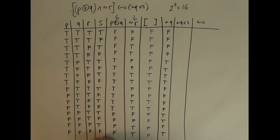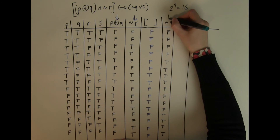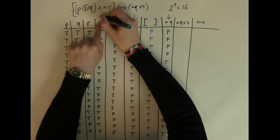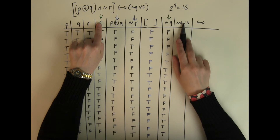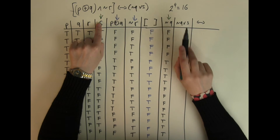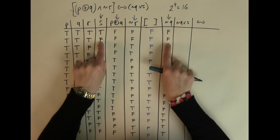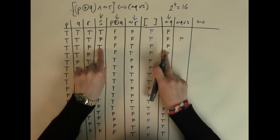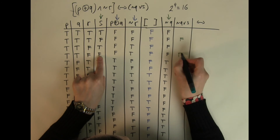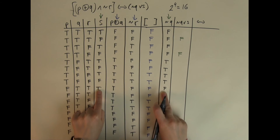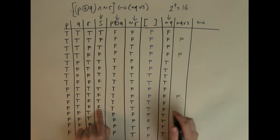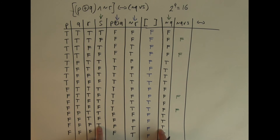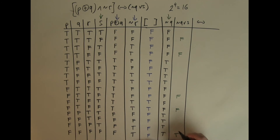Next I combine NOT Q and S using OR. The OR is only false if both of them are false, so I filter out those rows. Going through: both false gives false, both false gives false, both false gives false, both false gives false, both false gives false. The rest of the rows are filled in with trues.